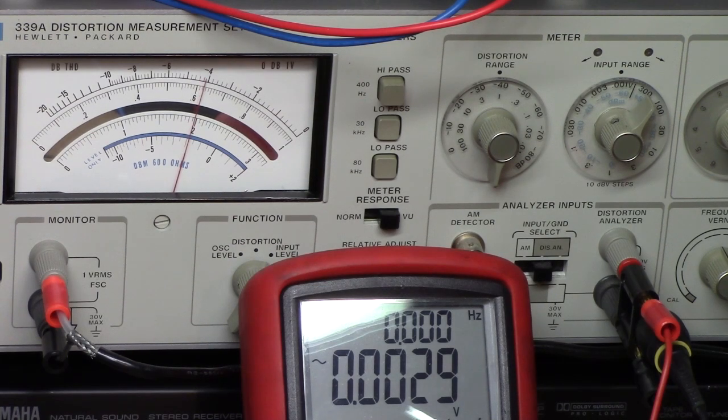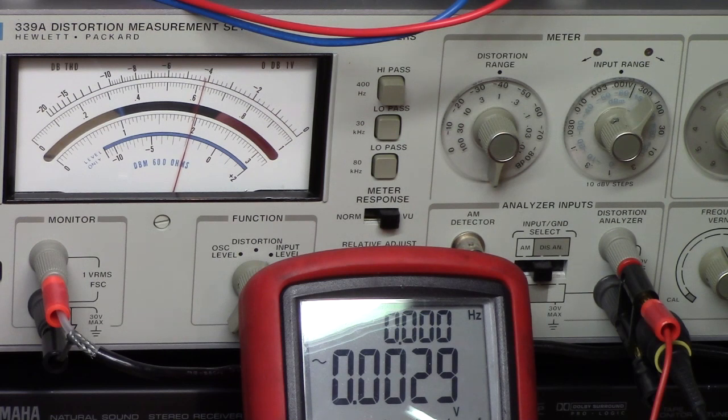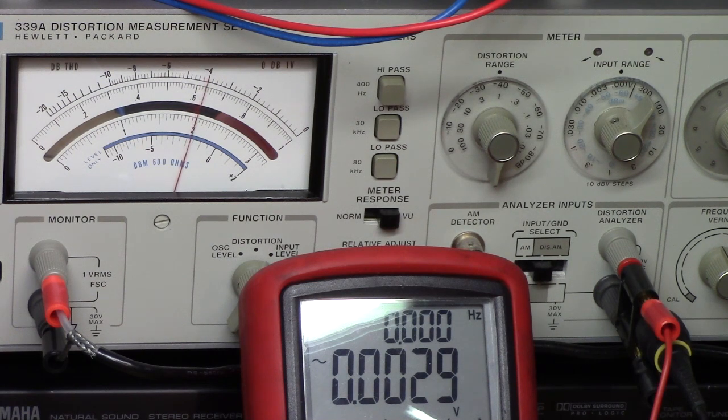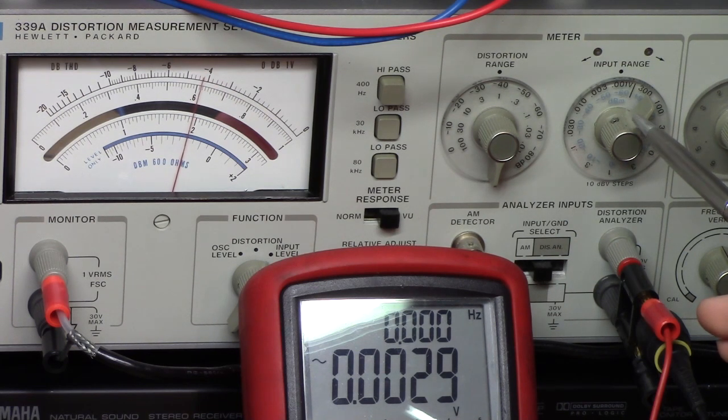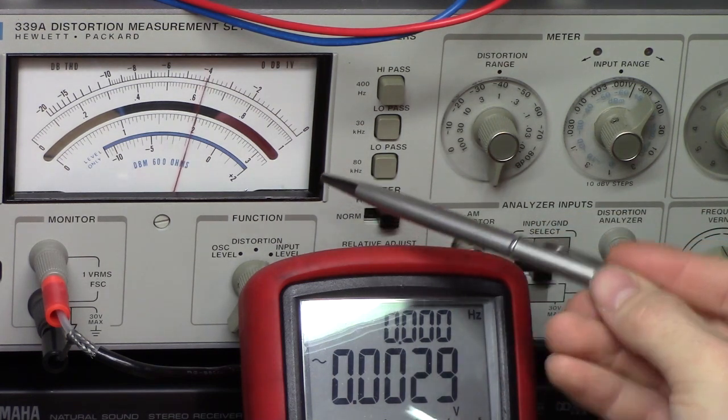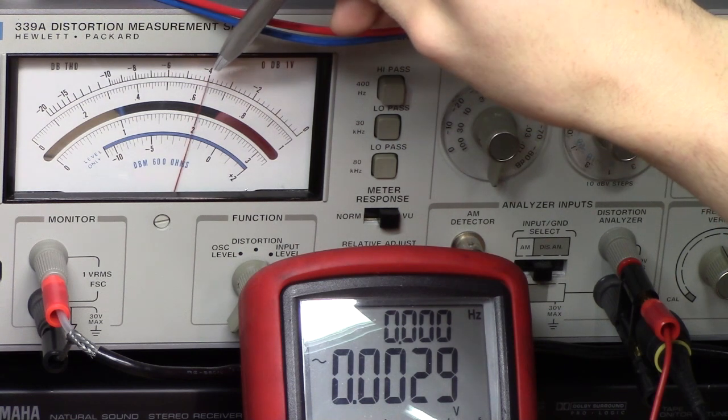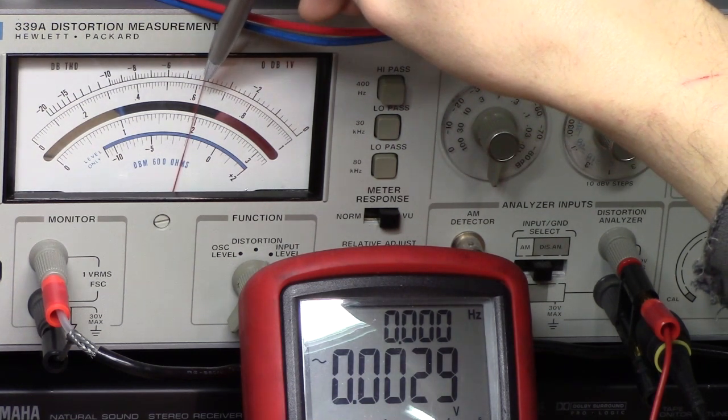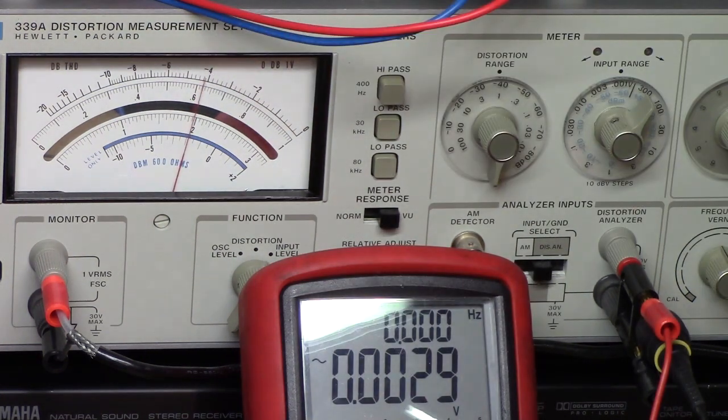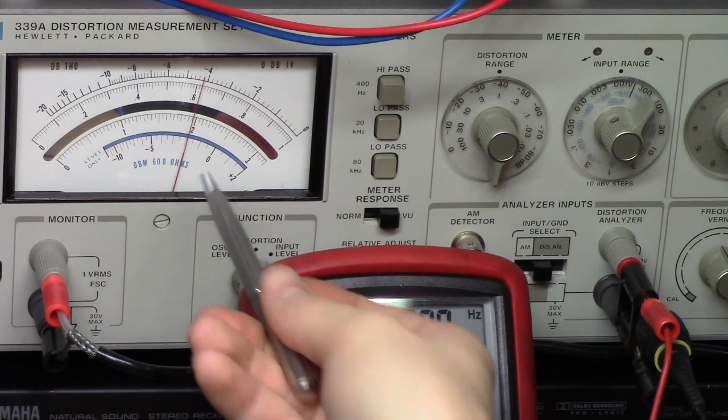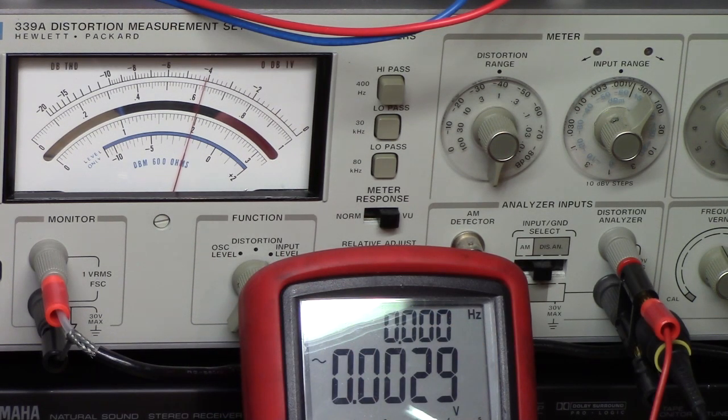The output of the amplifier is then connected to the HP 339A distortion meter and my Brymen BM869 there which are going to give us our test results. We're going to start off by measuring the noise for the amplifier. Right now we are measuring the noise output. We are at a minus 60 dBV scale which is 1 millivolt full scale and we're measuring about minus 64 dBV of noise or 600 microvolts, which is quite poor actually. It's about on par with the LePai, but that's not saying much. That's a relatively noisy amplifier.